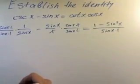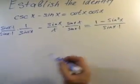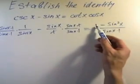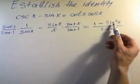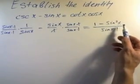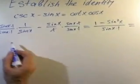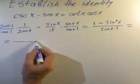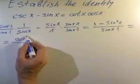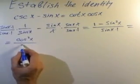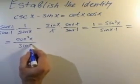Using Pythagorean's theorem we know that 1 minus sine squared x gives us cosine squared x. So we rewrite this as cosine squared x over sine x.